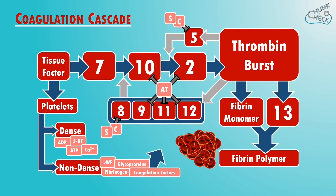Let's look at two of the most common anticoagulant drugs. Firstly, heparin, which acts by binding to antithrombin to enhance its effect. You can see how heparin prevents clotting by indirectly inhibiting factors 9, 10, 11, 12 and thrombin.